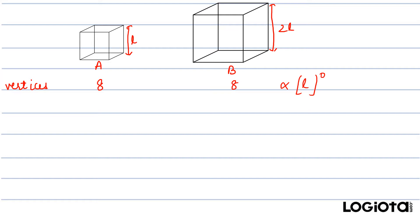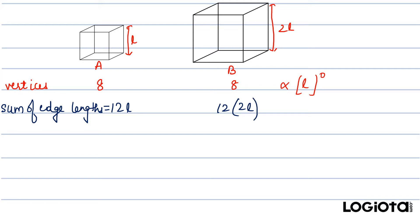Now let's see how we can calculate the sum of the edge length. The formula is 12L. So for the first box it will remain 12L, but for box B it will be 12 into 2L. You can see that if we have doubled the length of the edges, the sum has also doubled. So we can say that the sum is proportional to L raised to the power 1, because if we doubled the length, the sum also doubled — it is directly proportional.